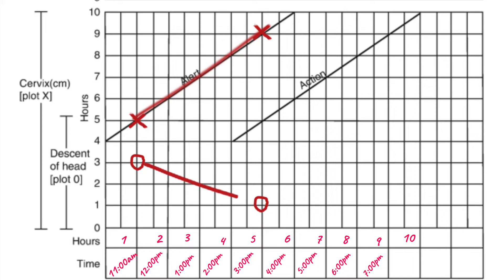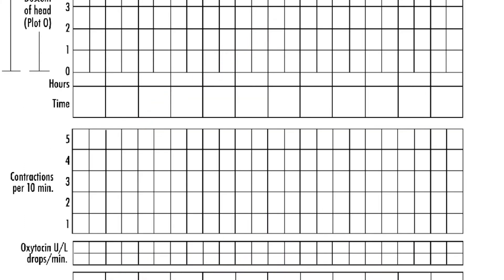After plotting, we connect our line from the first plot to the second. We do the same for the descent, and we can see the line progressing as expected.